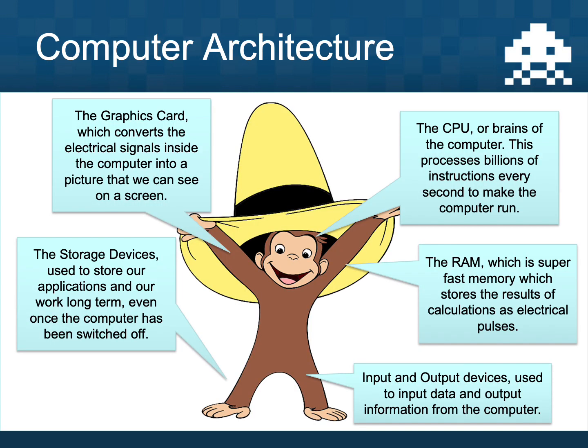As a quick recap, here is the Archie model we used last time. Archie is a basic cartoon character with two legs, two hands, and a head, and each part represents a bit of the computer architecture. We start with Archie's head or his brain, which is the CPU — where all of the processing takes place and all instructions are processed to make applications run.